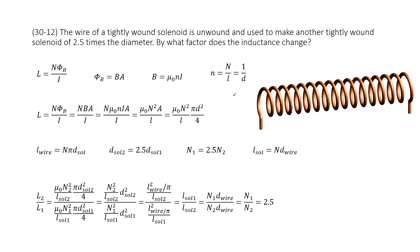So you can see we have a solenoid, right? Look like this one. And now we need to make another solenoid from the wires the initial solenoid has. And this time the second solenoid has the diameter 2.5 times larger.